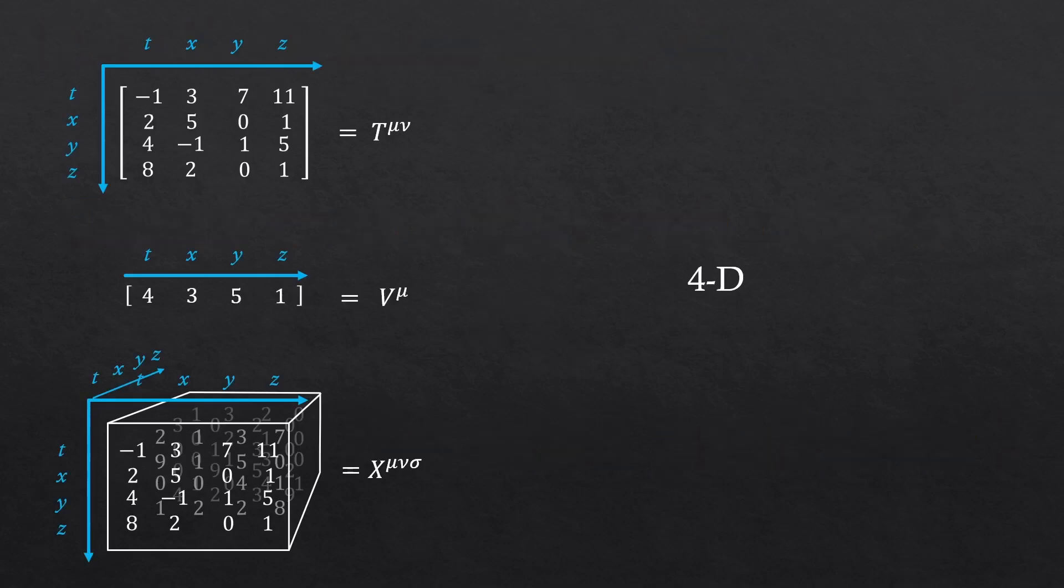When we study general relativity, we consider four space-time dimensions. So we'll always use four-dimensional tensors. It could be any rank, but the dimension number is always fixed to four.